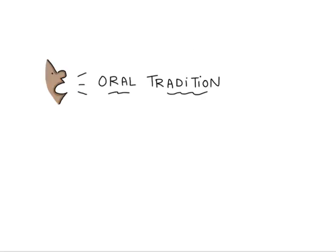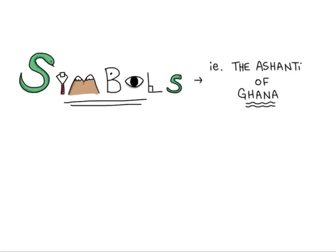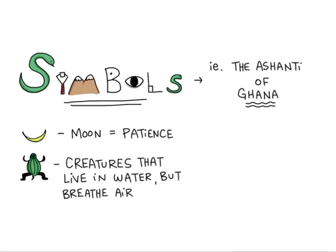Let's take a closer look at oral traditions. They can be transmitted as folk tales, jokes, songs, or chants. Another element that features prominently is symbols. A real-life situation or example could be the Ashanti of Ghana. For example, the moon as a symbol represents patience. And also, creatures that live in water but breathe air represent adaptability.